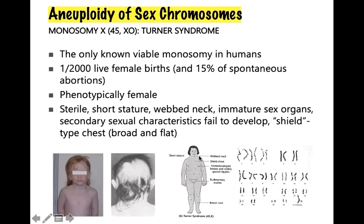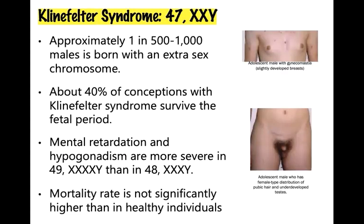The severity of somatic malformation in Klinefelter syndrome is proportional to the number of additional X chromosomes. These individuals have an additional X chromosome, mental retardation, and occur in approximately one in 500 to 1000 males. About 40 percent of conceptions with Klinefelter syndrome survive the fetal period. Affected individuals have precocious genital development, small breasts, and are usually tall.